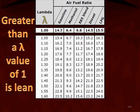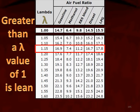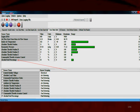If we're greater than a lambda value of one, we're lean. For example, at a lambda of 1.1, gasoline would give us 16.9 parts of air — higher than the stoichiometric 14.7. The E85 blend at that same lambda would give us 11.2 pounds of air.